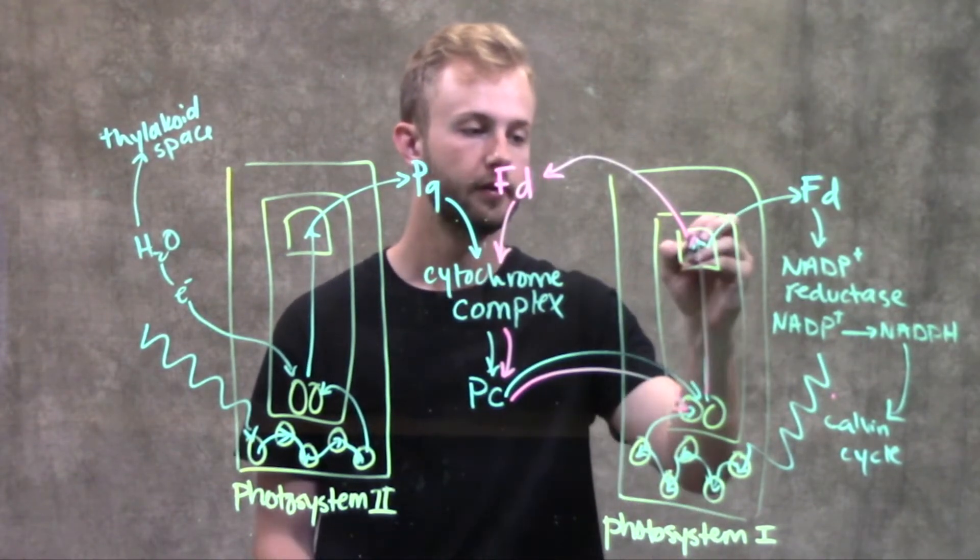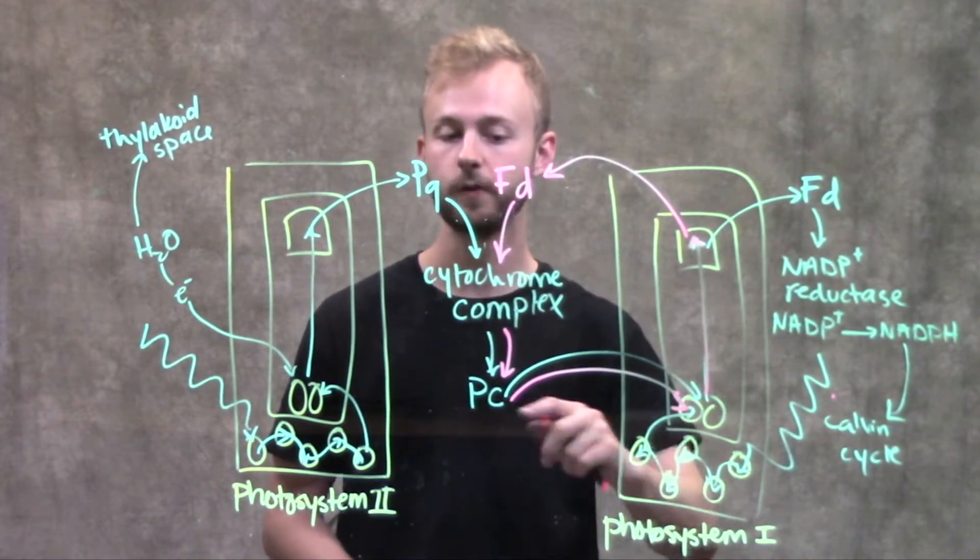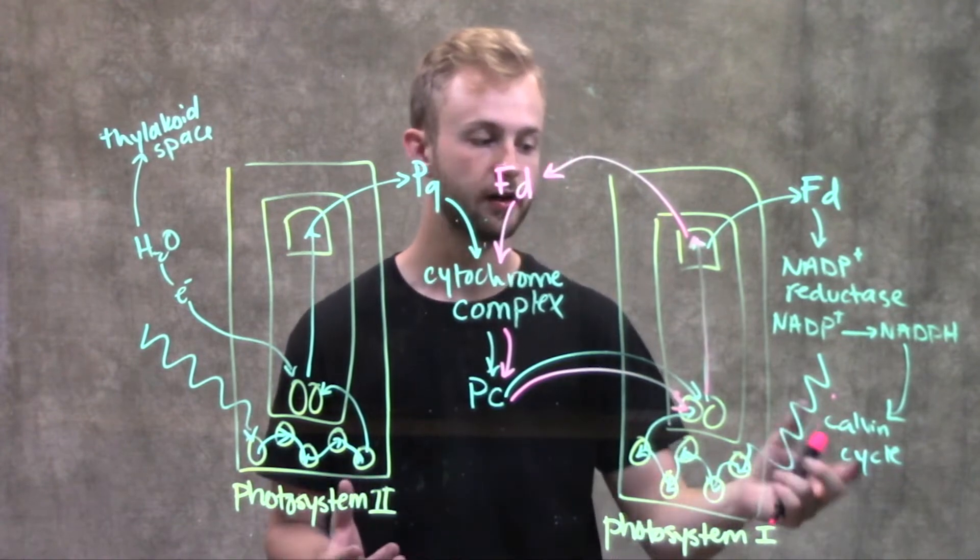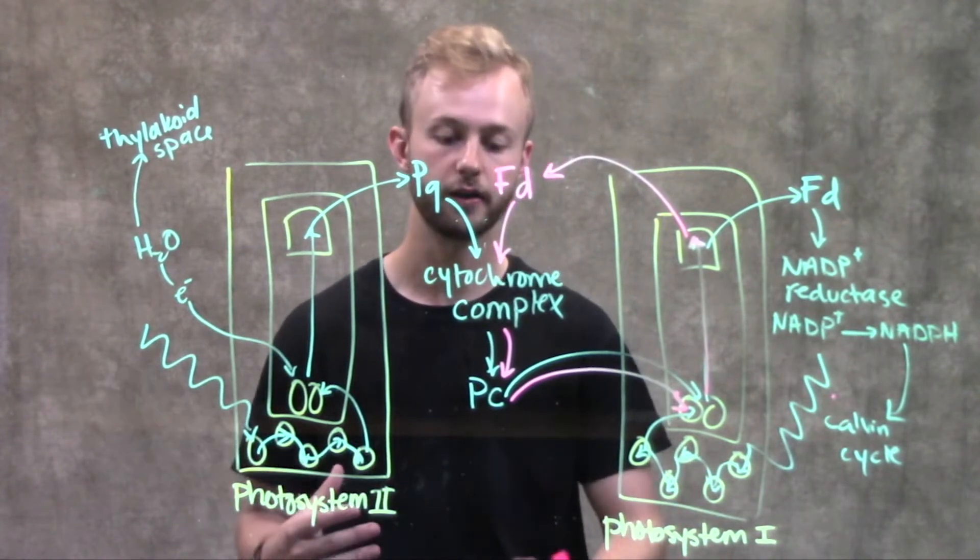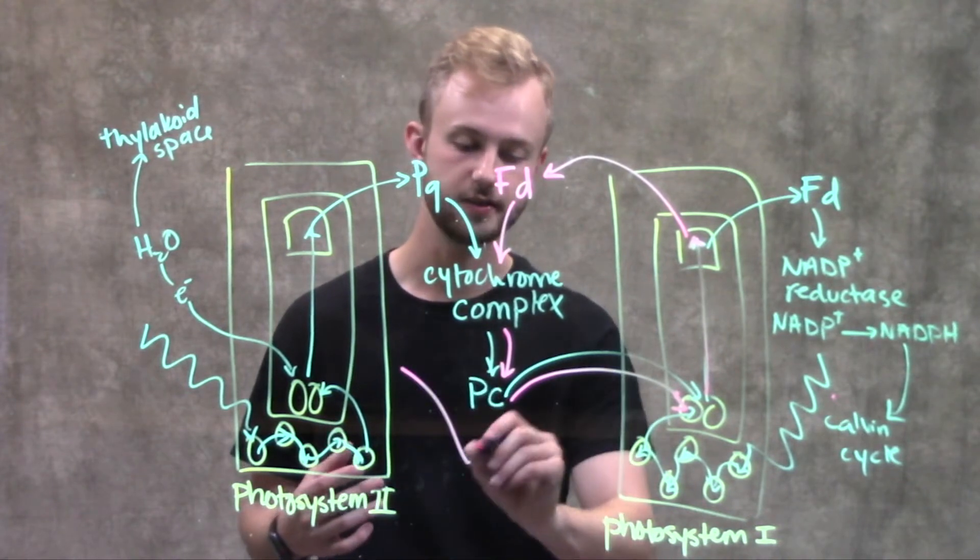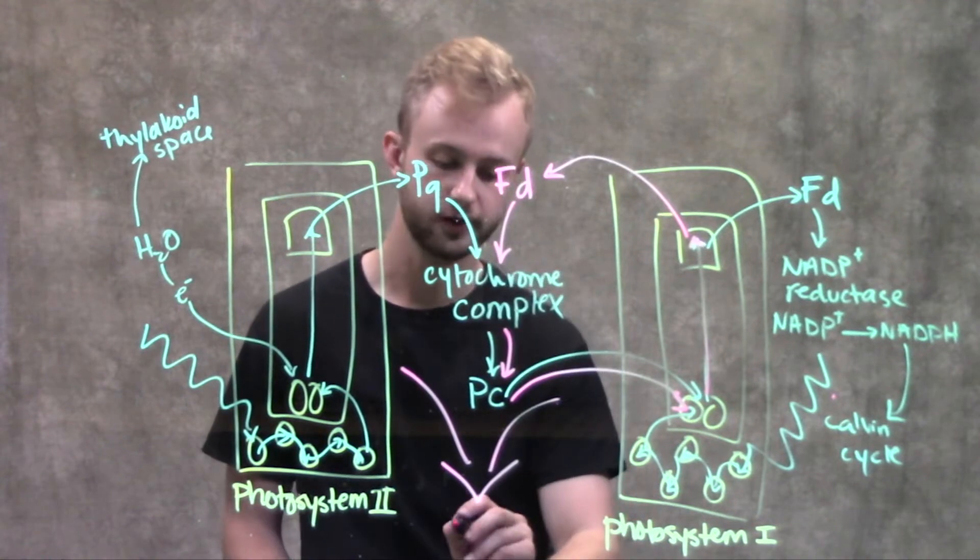We can see why it's called cyclic electron flow because it forms a repetitive cycle. Even though it can't send anything to the Calvin cycle and doesn't release oxygen from splitting water, it's still able to produce ATP by using this electron transport chain.